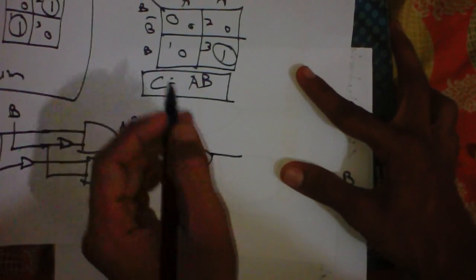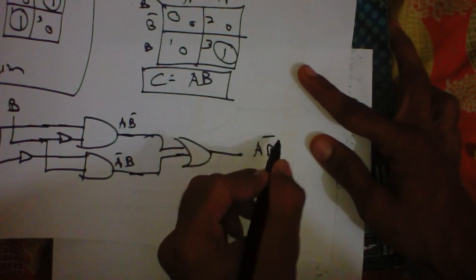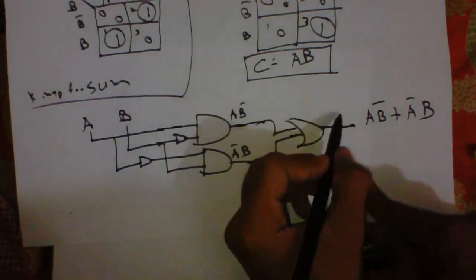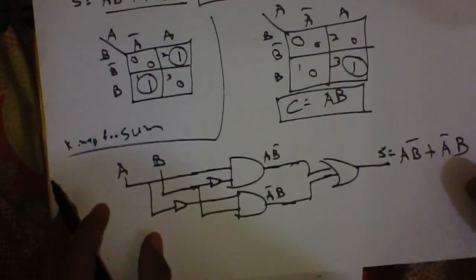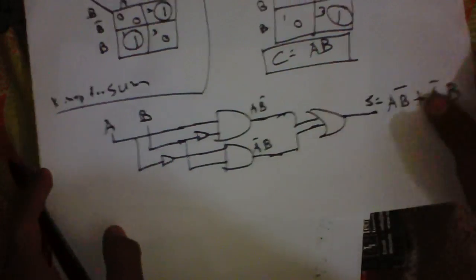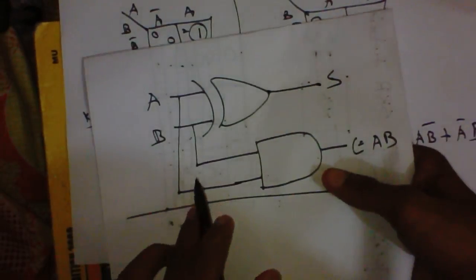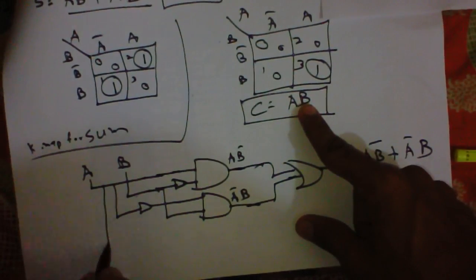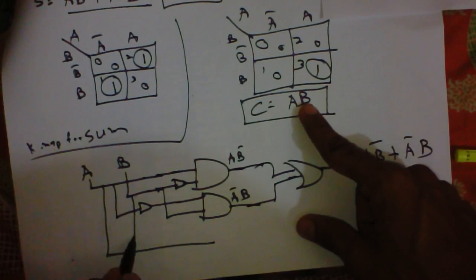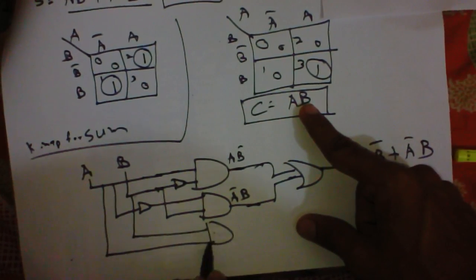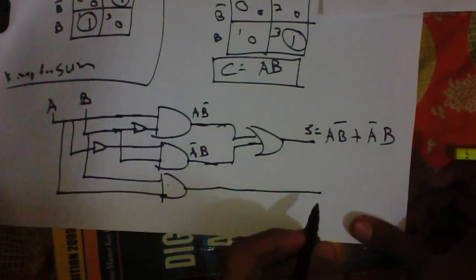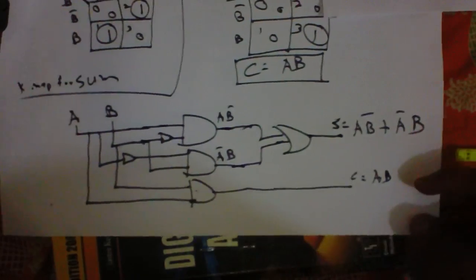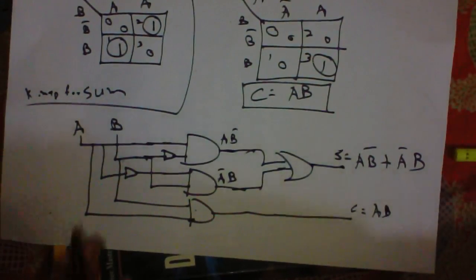Then I perform the addition of both A·B-bar and A-bar·B using an OR gate, which gives the output A·B-bar + A-bar·B — this is the output of sum. And for the output of carry, we simply perform like in the last circuit: C = A·B. So we get A and B into an AND gate, and the output is C = A·B. This is the basic gate-level circuit diagram of the half adder.